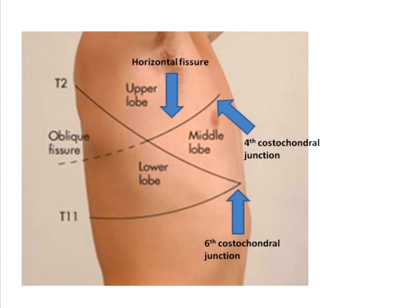Subsequently, after crossing the fifth rib in the mid-axillary line, it goes forward in an anterior and inferior direction up to the sixth costochondral junction. So from the D2 spinous process, through the fifth rib in the mid-axillary line, to the sixth costochondral junction — that is how you draw the right oblique fissure.